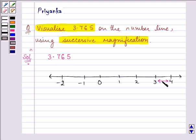So, using successive magnification means now we'll be having 10 points between 3 and 4, right? And it is saying that 3.765. So that means it will be somewhere here.